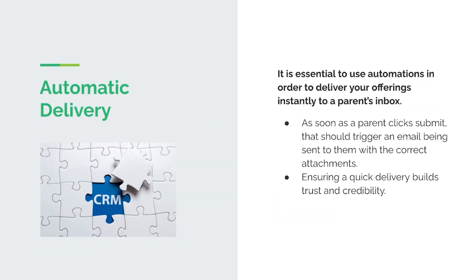Automatic delivery is also crucial, which is why you should be using automations on your website. If your only way for parents to engage with you is putting your phone number and email on your website, you're missing out. Using automation so parents can submit their contact information and automatically receive a response really builds trust. As soon as a parent clicks submit to request tuition information, that should trigger an email in your system sent directly to them with the correct attachments. Ensuring quick delivery builds trust and credibility. You can use a CRM — a client relationship manager — so that every form triggers a specific email to that address, so you don't have to do things manually.